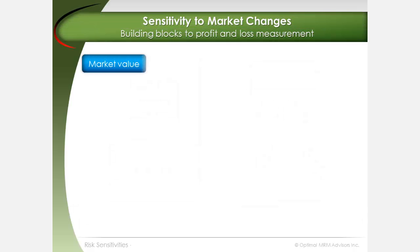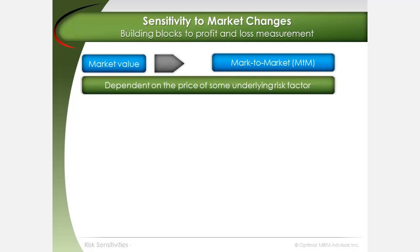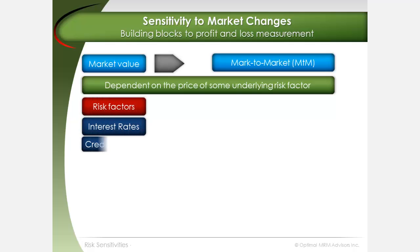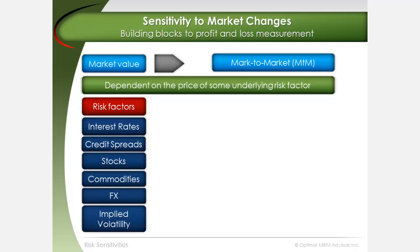The market value of an investment is referred to as its mark to market, which is dependent on the value of an underlying risk factor. Risk factors include interest rates, credit spreads, stocks, commodities, and foreign exchange prices. Lesser intuitive risk factors include implied volatility and time, as in the case of options whose mark to market is dependent on these factors.